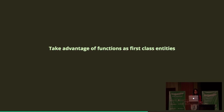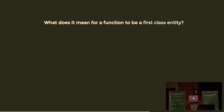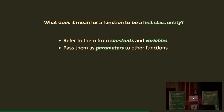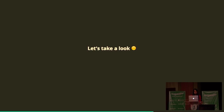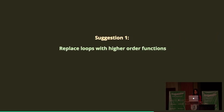I want to talk about one more building block because I think it's pretty important and JavaScript is particularly good at letting us use it: taking advantage of functions as first-class entities. What does it mean for a function to be a first-class entity? It just means we can refer to them as constants and variables, pass them as parameters to other functions, and return them as results from other functions. Functions can be thought of as variables you can pass around. I'll talk about four different ways we can use them.